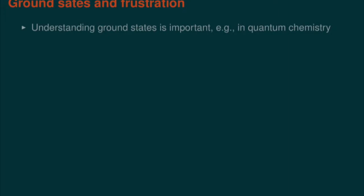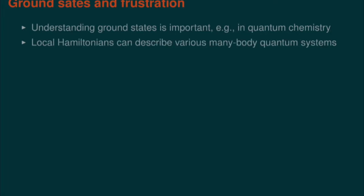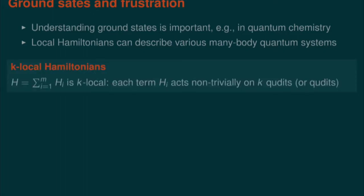We are interested in preparing ground states of Hamiltonians, like in quantum chemistry, and a lot of research is going into this direction. In particular, in the direction of local Hamiltonians, because in many ways of quantum physics, this is a natural assumption. I will talk about local Hamiltonians in a more generic manner, meaning that my Hamiltonian is a sum of local terms, where each local term acts on k qubits. But they don't need to be arranged in a spatial manner.